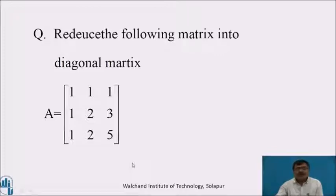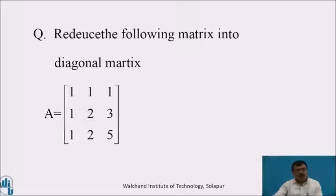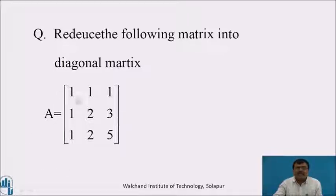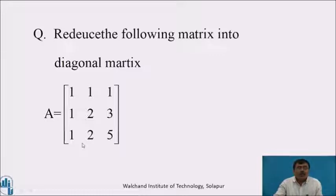Now, first the video — reduce the following matrix into diagonal matrix. I hope all of you will get the result. Diagonal matrix means to reduce matrix C to the diagonal matrix: the diagonal elements remain, and the elements above or below the diagonal are made 0 by using elementary row transformations.